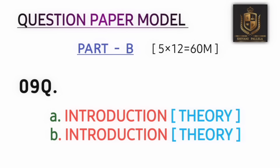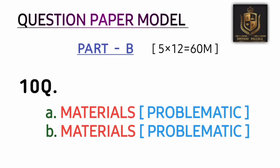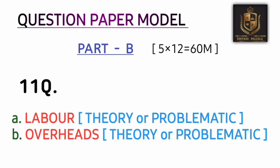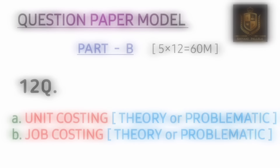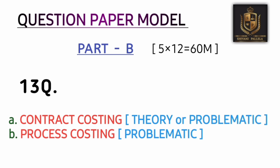Now we'll discuss the question paper model, especially Part B, which is the most heavily weighted section — 60 marks. Question nine A and B and question ten A and B will come from Introduction and Materials. Question eleven A will come from Labor, and eleven B from Overheads. Question twelve A will be Unit Costing or Output Costing, twelve B will be Job Costing. Question thirteen A will be Contract Costing, and thirteen B will be Process Costing.